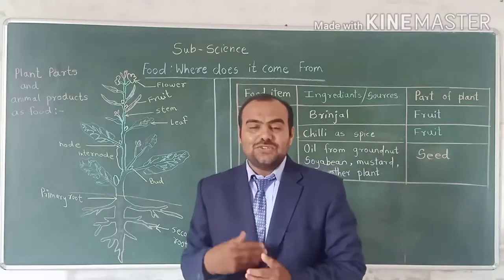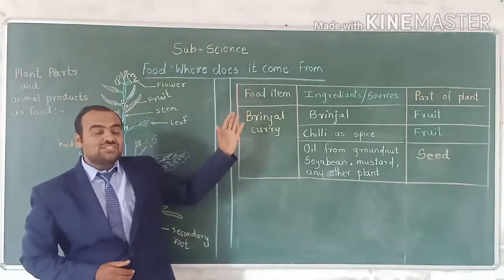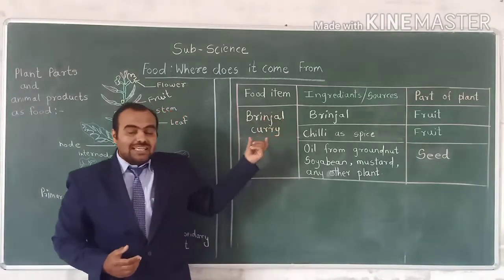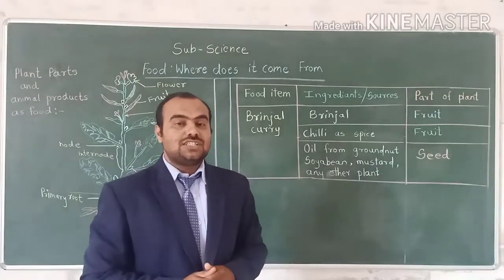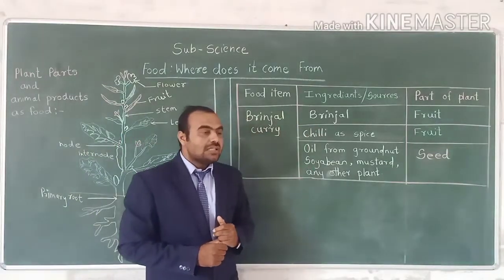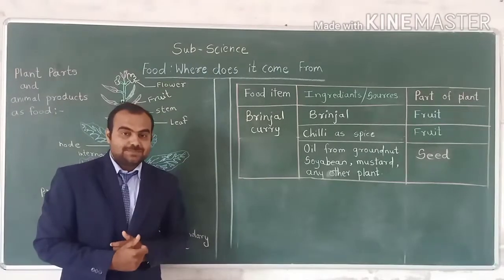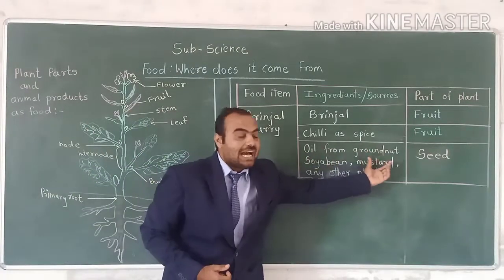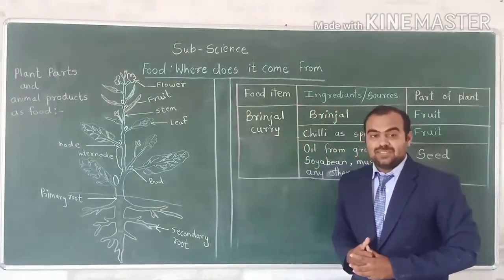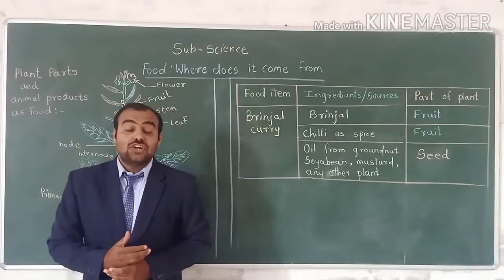In other plants, we use different varieties of plant parts. Here I am drawing a chart. In that, I am mentioning one of our favorite vegetables — green dal curry. For that curry, the ingredients we use: chili, which we get from the plant — it is a fruit of that plant. Then oil from groundnut, soybean, mustard, or any type of oil from any plant — it is obtained from the seed of the plant. And we know that the green dal is also a fruit of that plant.